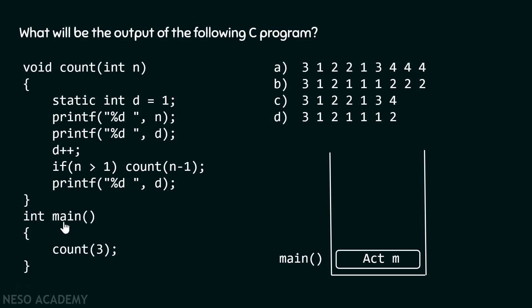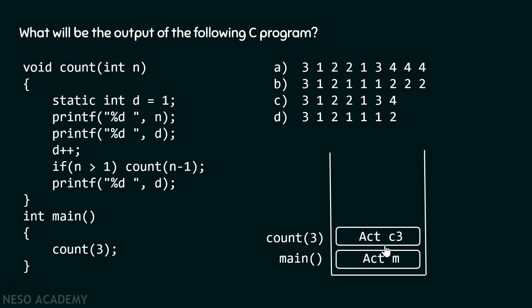Inside the main function, we are calling the count function and passing the argument 3 to variable n. So the control will transfer from main function to count function, and the activation record of this function will get stored inside the stack. Now n is equal to 3. Inside this function, we have one variable d, which is a static variable, and it is initialized to value 1. After that, we have a printf function in which we are printing the value of n. n contains value 3, therefore 3 will get printed on the screen.